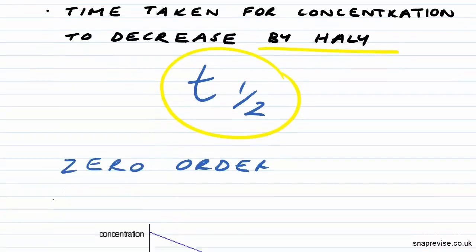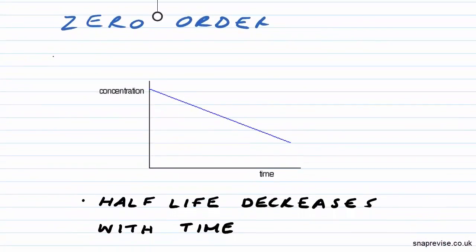If we look at a zero-order reaction, which has this graph here, this is how a concentration time graph for a zero-order reaction will look, the half-life decreases with time. As we move through time, the half-life becomes shorter and shorter.